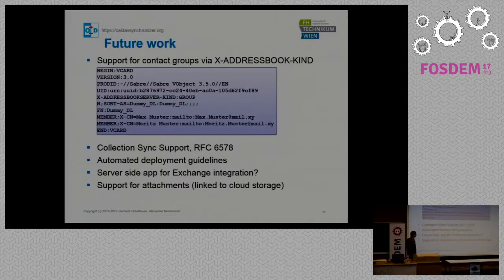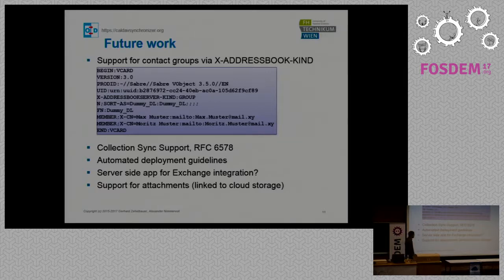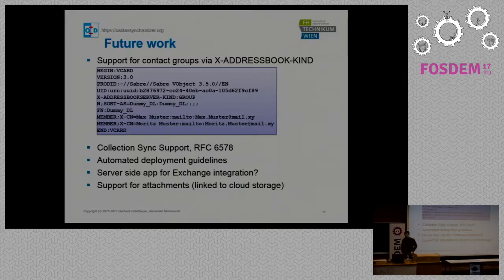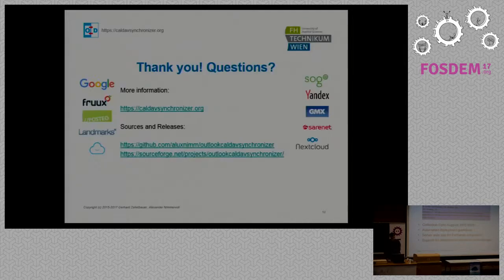For future work, we plan to support more kinds of contact groups. We want to implement collection sync report which should speed up the initial synchronization. There may even be the possibility to implement a server-side solution natively on the Exchange server. We will support attachments soon — possibly linked to cloud storage, for example via the NextCloud API. And there are many other ideas and future tasks to do.